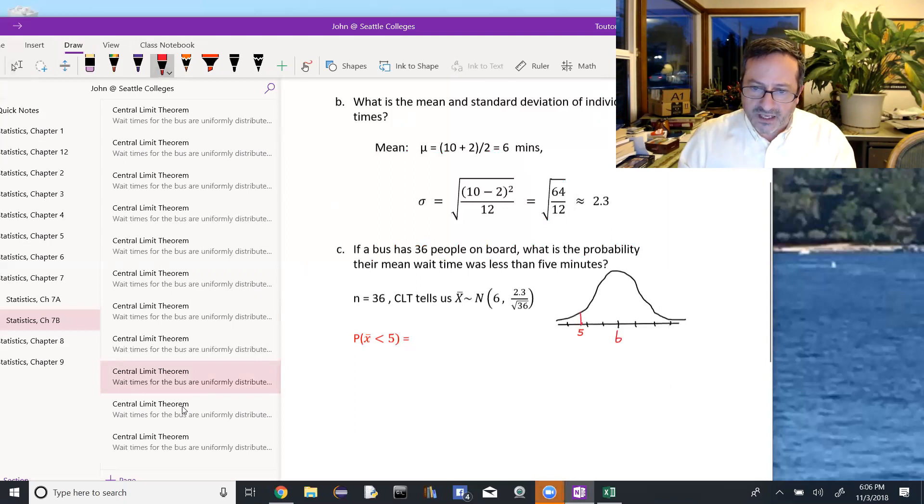So then I go to 5, I draw up, and then shade the stuff to the left. And since that's an area on the left, Excel can find that for us.